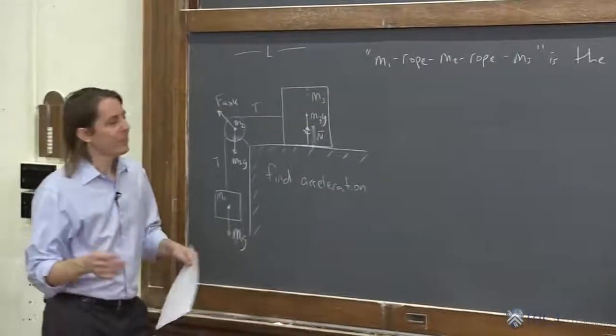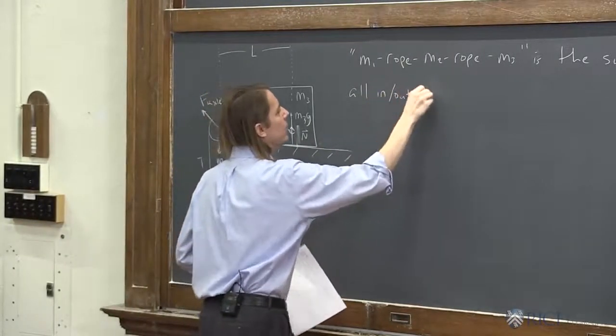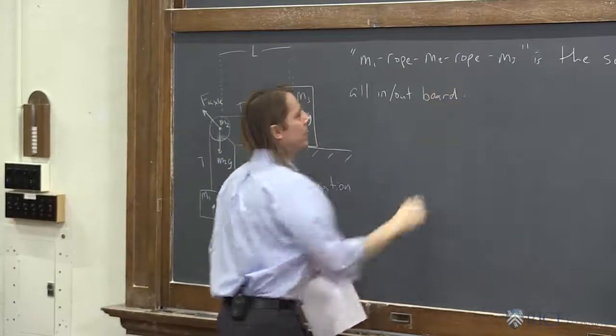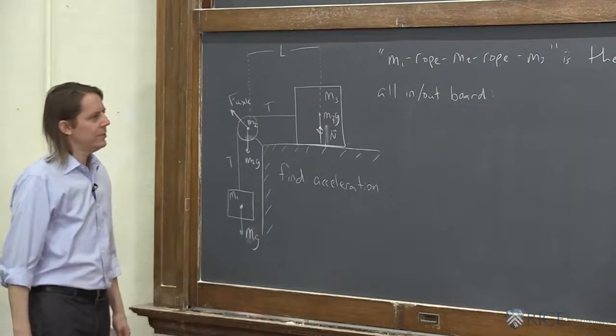I'm going to leave the vector notation off and remind you that these are all in or out of the board. When it's positive, it's out of the board. When it's negative, it's into the board.